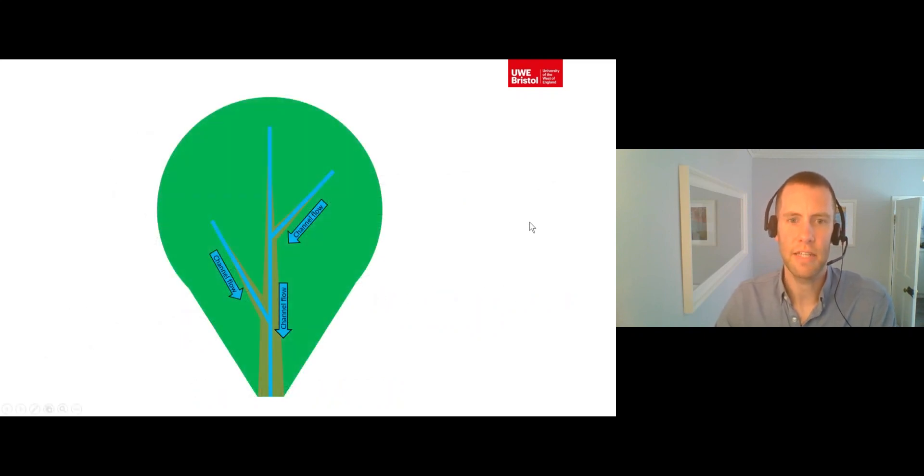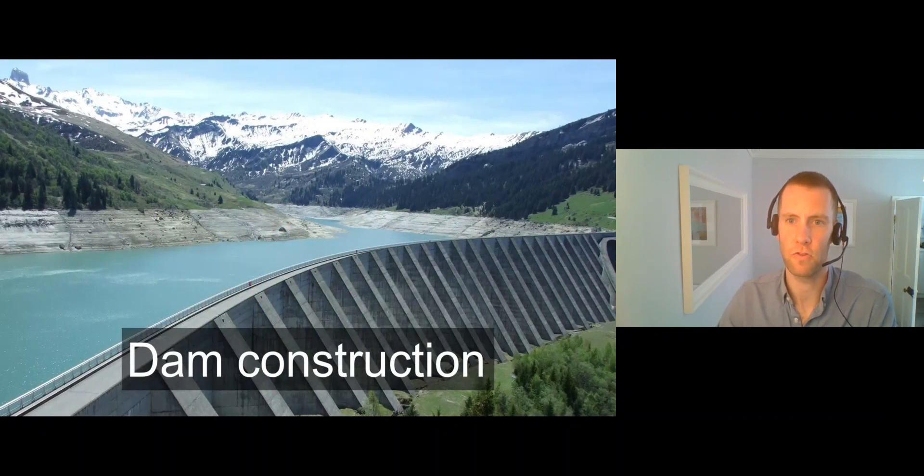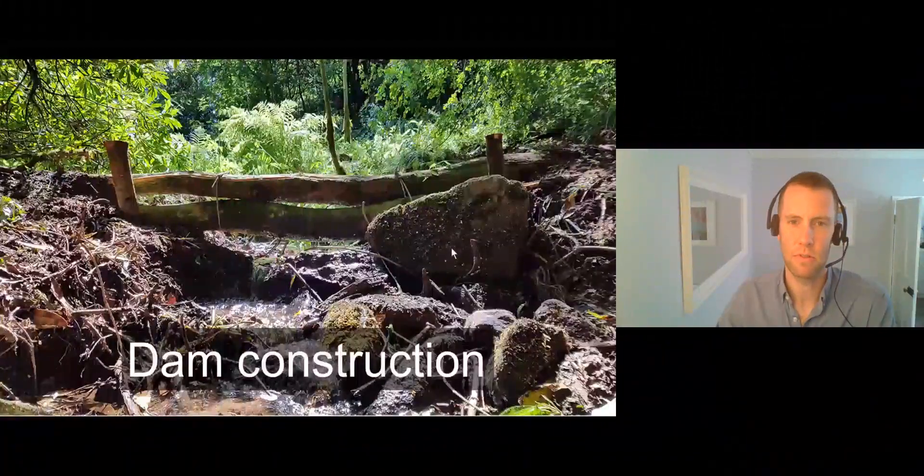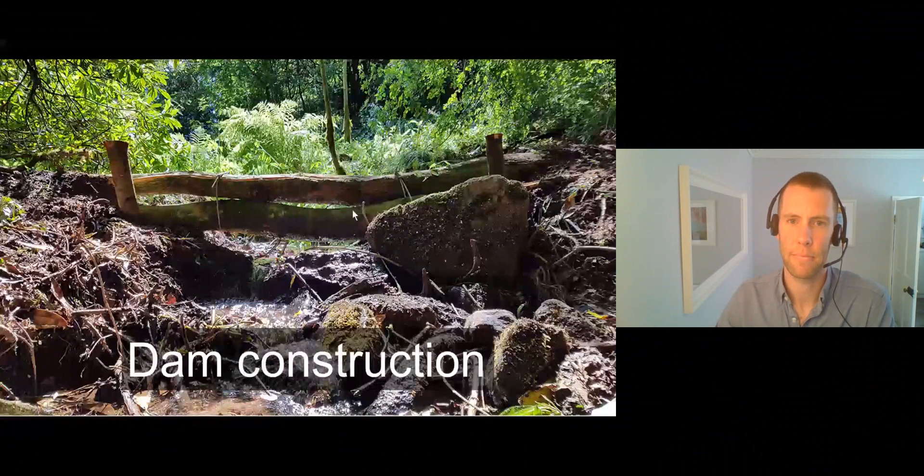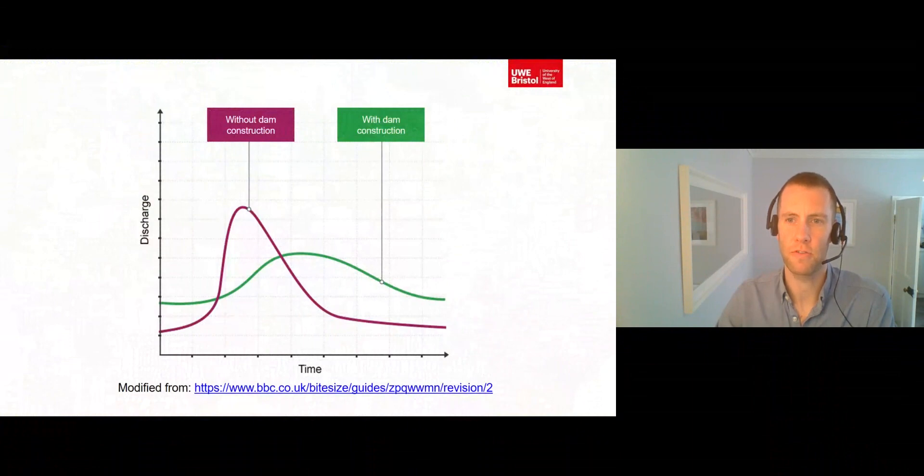And finally, let's consider how humans can influence the way water travels along river channels. Dams can be constructed to hold back the progress of storm flow through a river channel network. These can be large scale engineered dams like this one, or collections of micro scale leaky dams like this one. By slowing the progress of storm flow through a river channel network, the use of dams results in a less flashy drainage basin.